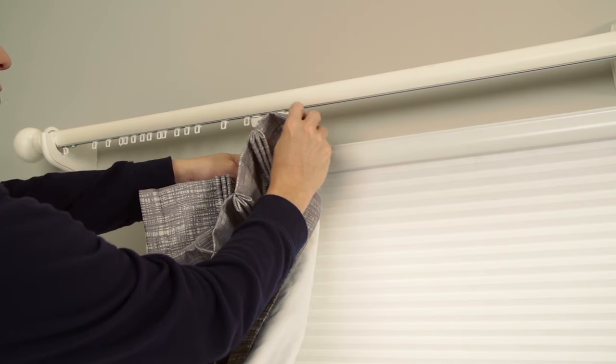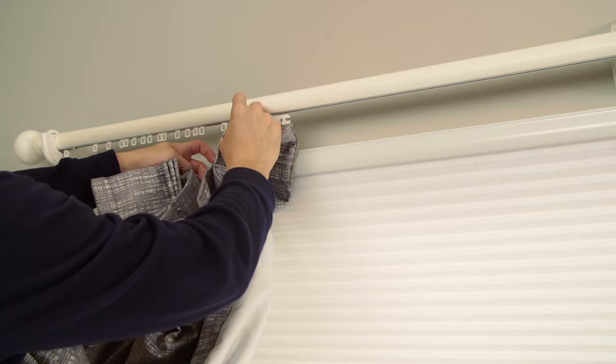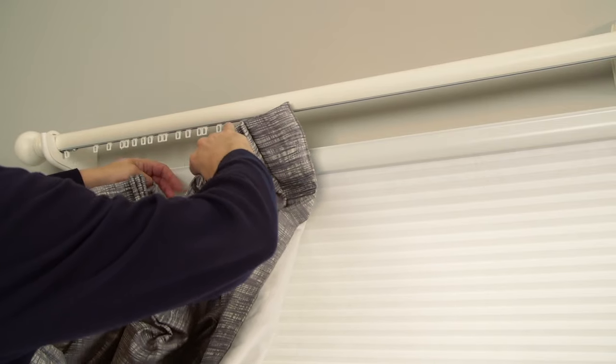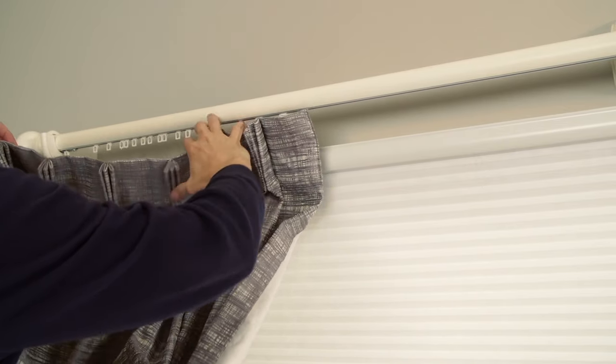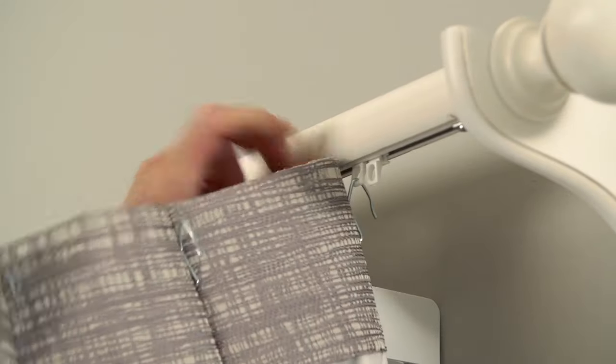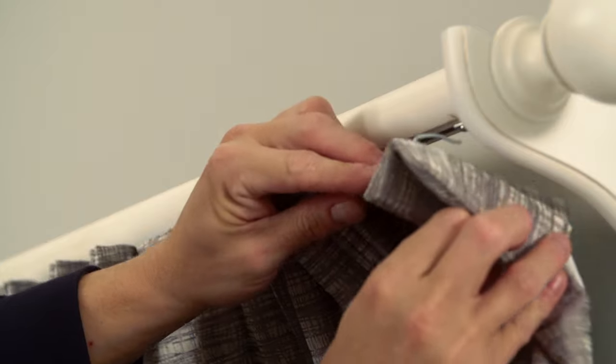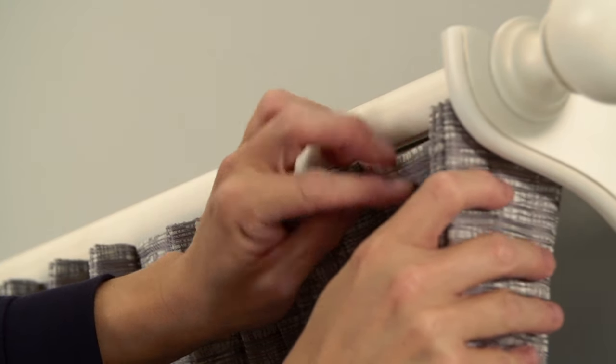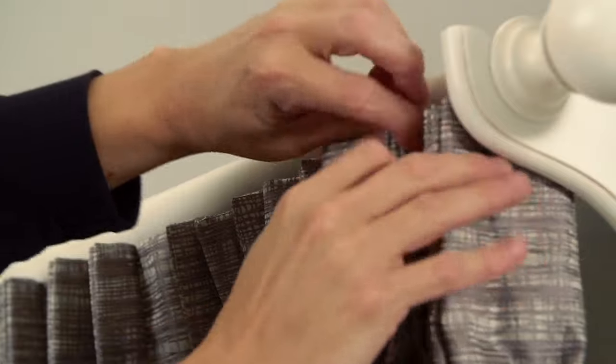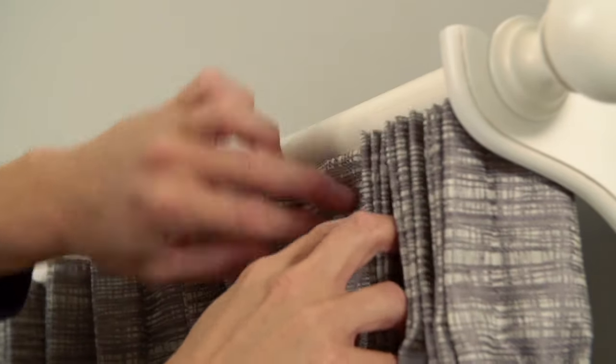Insert the first drapery pin into the first hole of the master carrier, followed by the second pin into the second hole, and so on. Insert the last pleat into the last ring or glide on the rod. The last pin will insert into a hole on the back of the bracket, or you can create a return by placing an eye screw into your wall level with the top of the last hook.